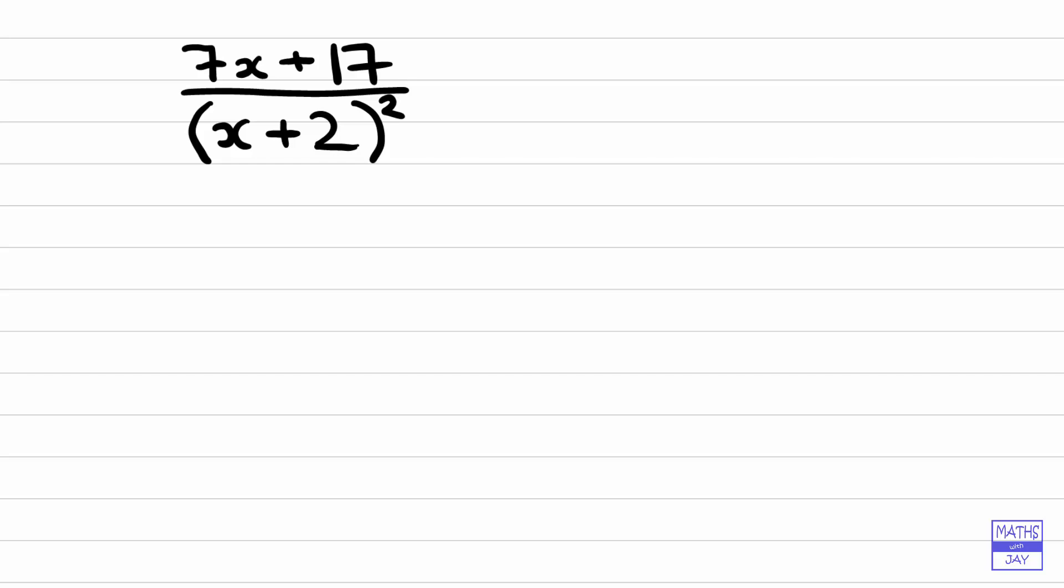Because we've got a linear factor in the denominator which has been squared, the power of 2 tells us that we're going to have two separate fractions.